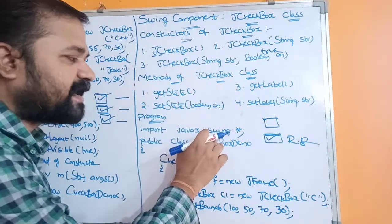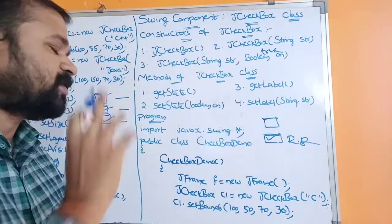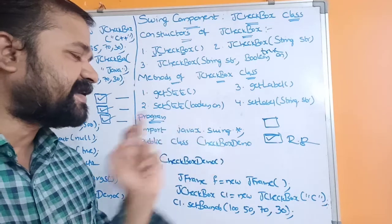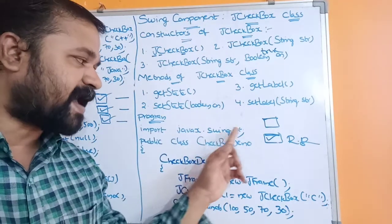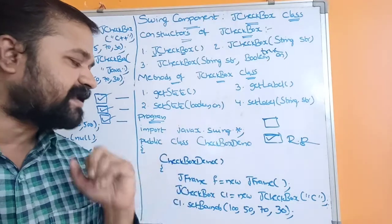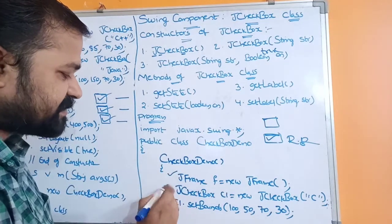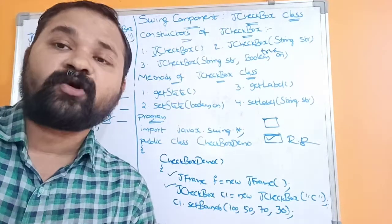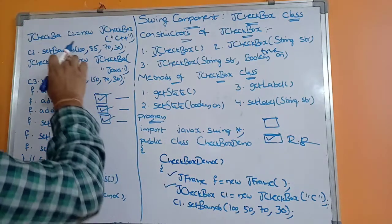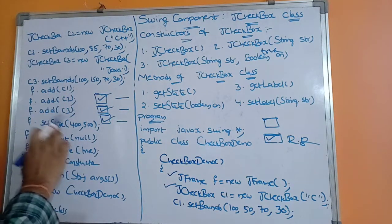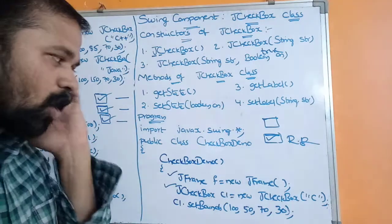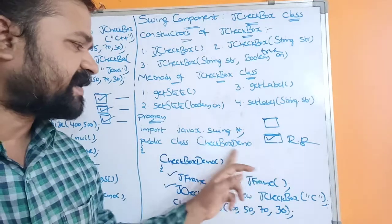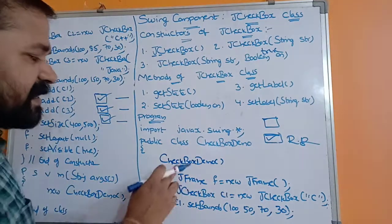The first statement is: import javax.swing.*; — here 'x' stands for extension. javax is the parent package and swing is the sub-package. We use the swing package because it contains JFrame, JCheckbox, and the Component class — which provides methods like setBounds(), add(), setSize(), setLayout(), and setVisible(). Next is the class declaration: class CheckboxDemo.